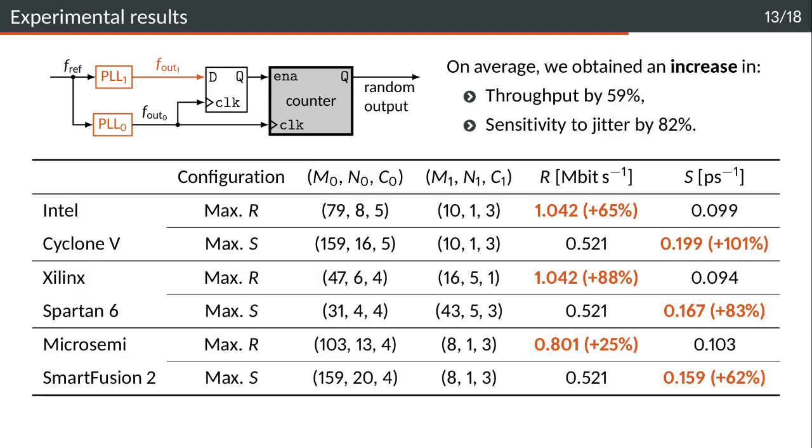Now some experimental results about this method. When we actually wrote down the constraints for the PLL TRNG, immediately, thanks to this method, we identified that in fact only the output frequency of PLL0 is constrained by the maximum frequency of the design, but not PLL1. The output frequency of PLL1 can be as high as possible. That allows us to release the constraint on FOUT1, and we immediately get an increase of throughput by 59% and an increase of sensitivity to jitter by 82% compared to the previous method.